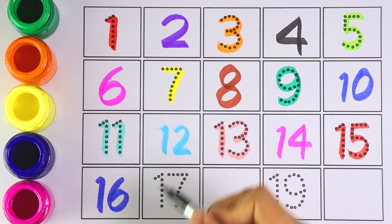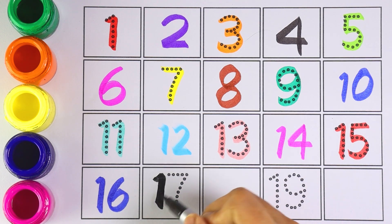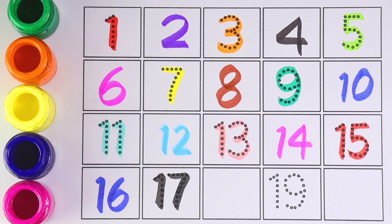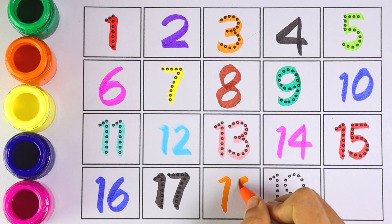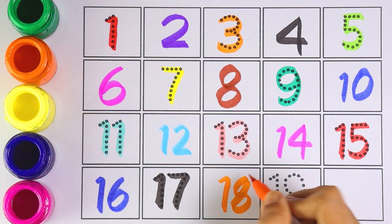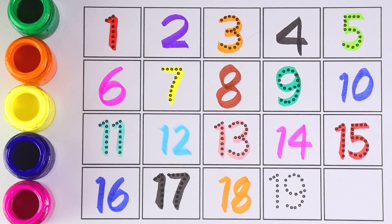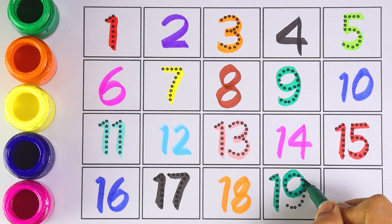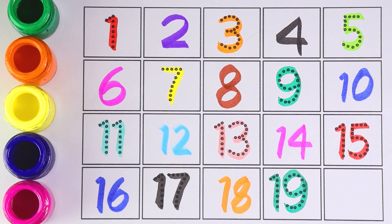Number sixteen. Seventeen — one and seven makes number seventeen. Number eighteen. Number nineteen — one and nine makes nineteen. Number twenty — two and zero makes number twenty.